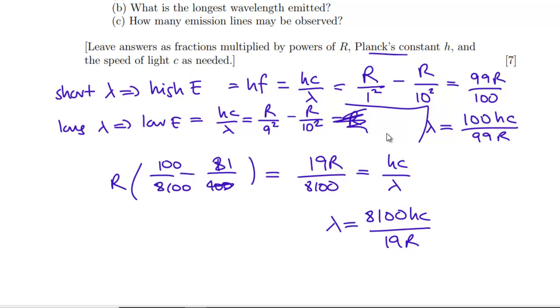And now we want, how many emission lines may be observed? So how many emissions? So we've got these 10. So we can do 10 to 9 to 8 to 7 down to 1. Then 9. So we're going to have 9 plus 8 plus 7 plus down to 1. So we need the 9th triangular number, which is 9 times 10 over 2, which is equal to 45.